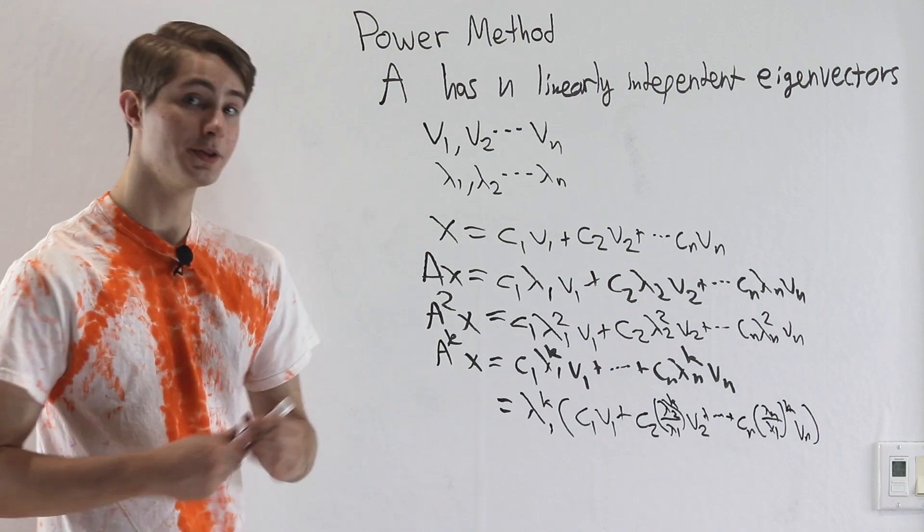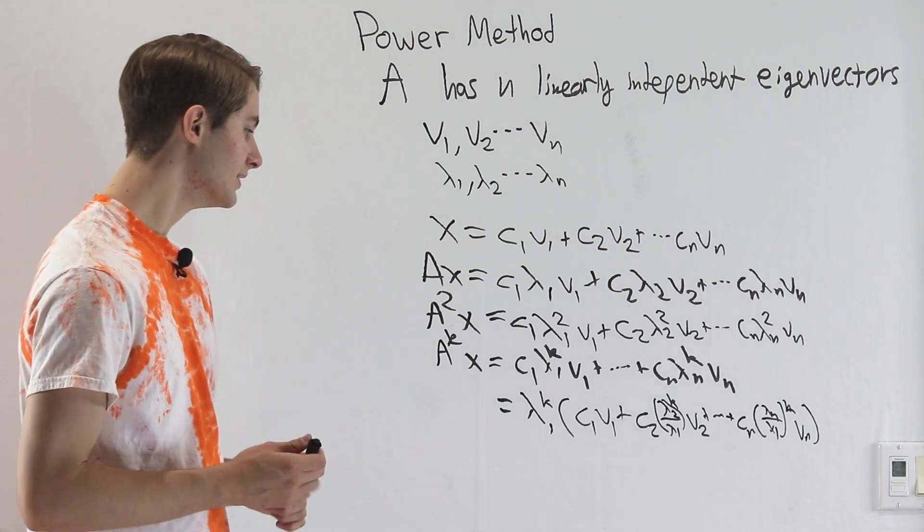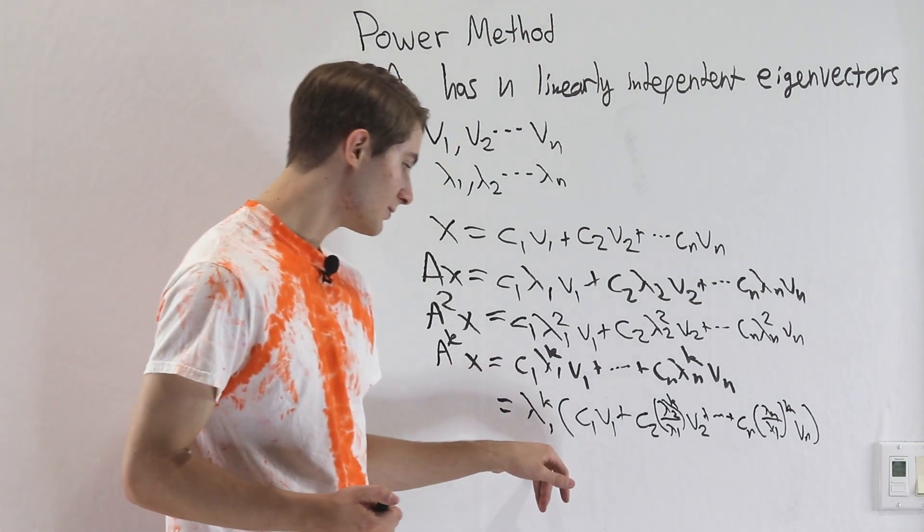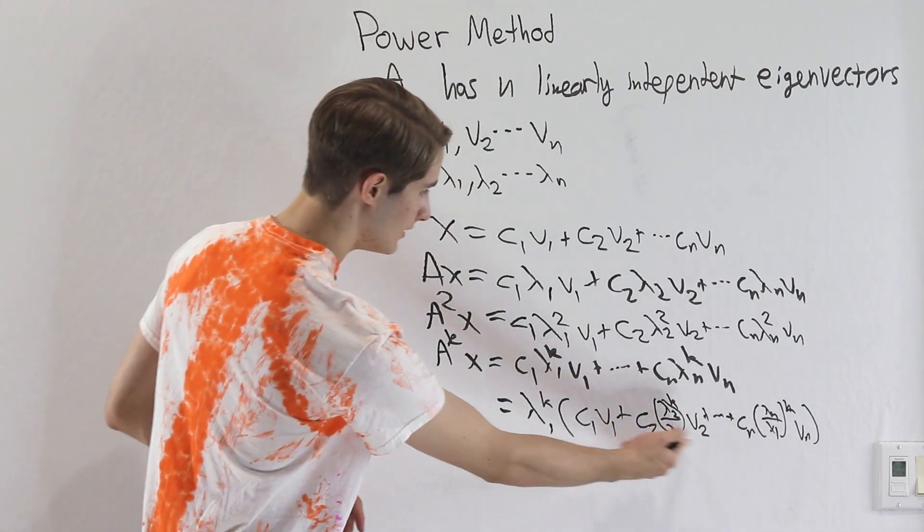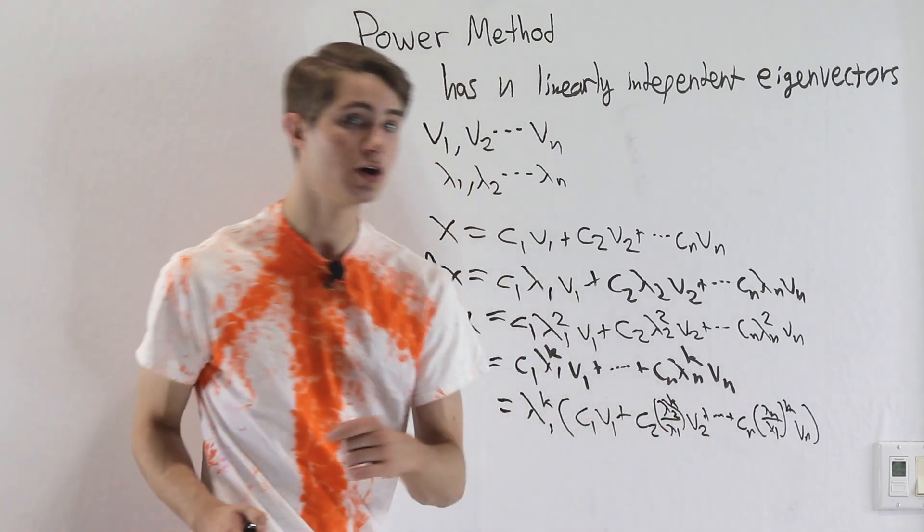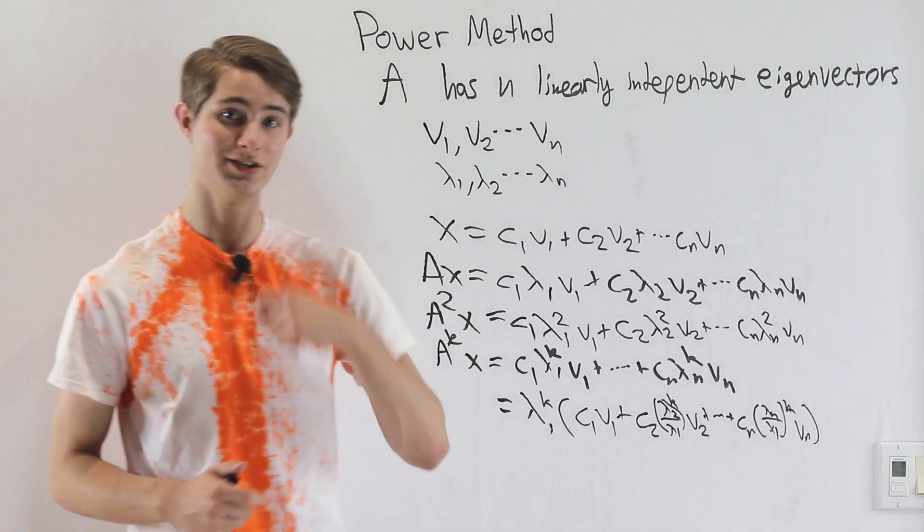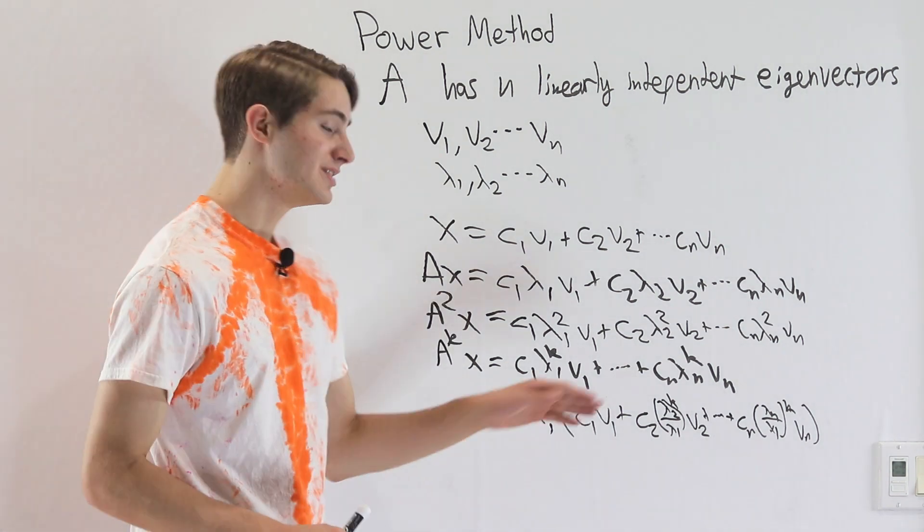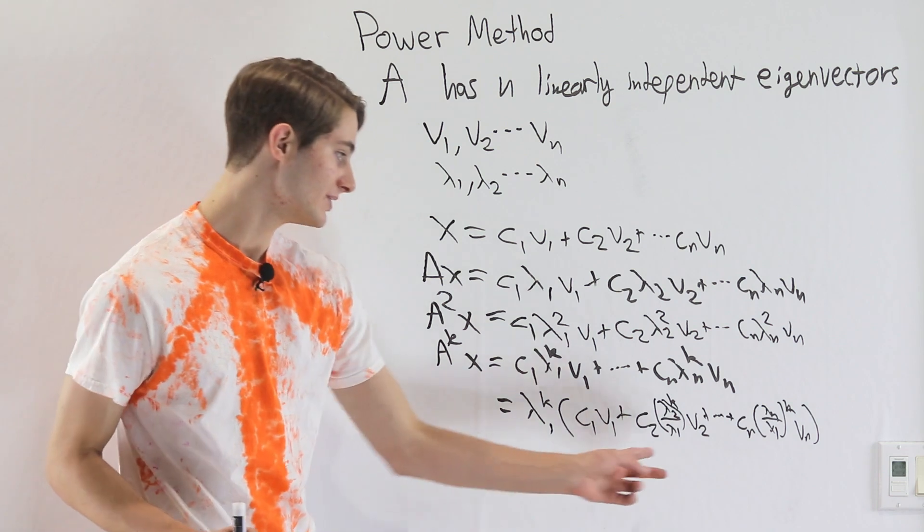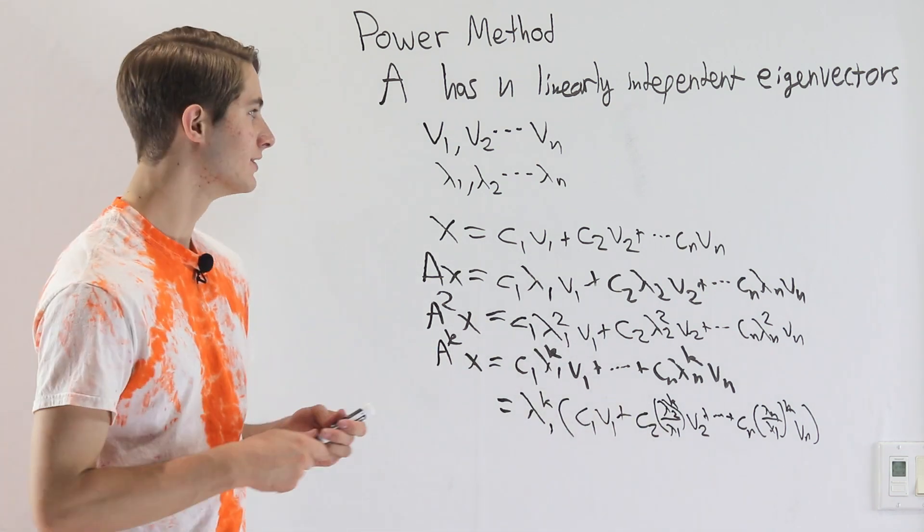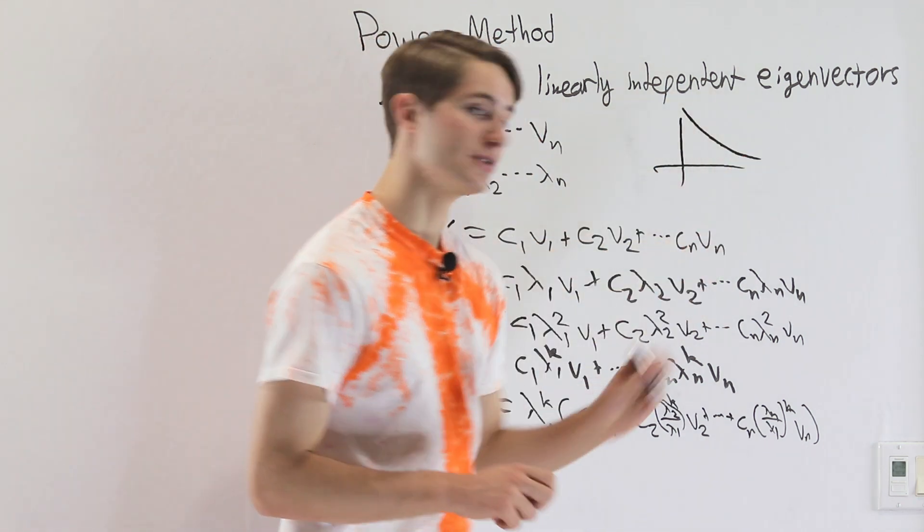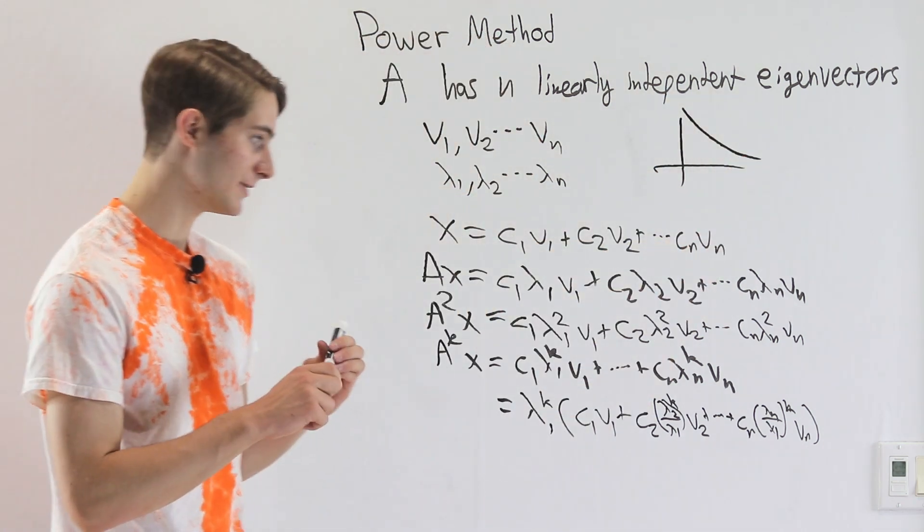Now the reason that we were looking at the dominant eigenvalue is because since lambda 1 is bigger than all of the other lambdas, these things inside the parentheses are all going to have magnitudes less than 1. So what happens if we take something smaller than 1 and raise it to some positive power that we keep increasing and increasing? Well then we're going to get some kind of decay towards 0 as we increase the power.